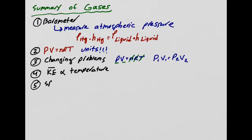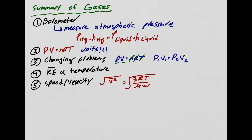Because gases are moving around rapidly all the time, we have to talk about speed or velocity. The equation we use is the root mean square: the square root of 3RT over molecular weight. That gives us the velocity of gases.